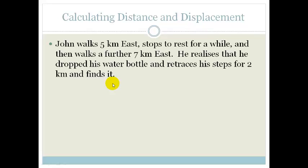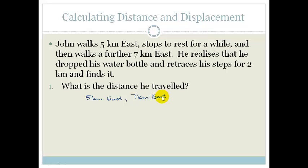Right, so let's start at the beginning. Let's look at his distance. Do you agree that he walked 5 kilometers east, okay? He then walked another 7 kilometers east, and then he realized that he dropped his water bottle, and he retraced his steps, which means that he went what? He went 2 kilometers west.